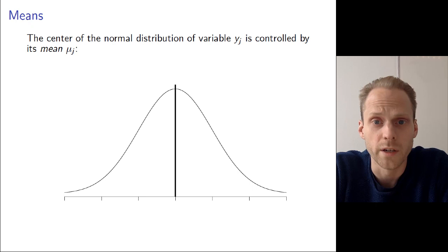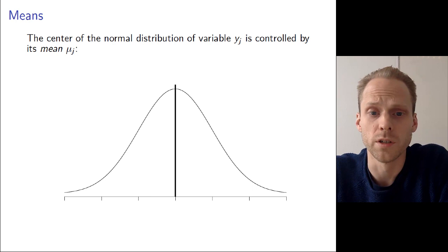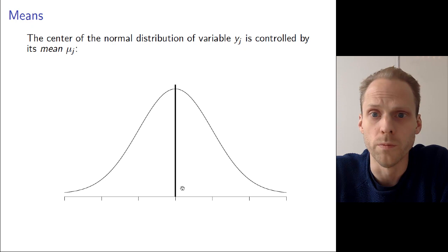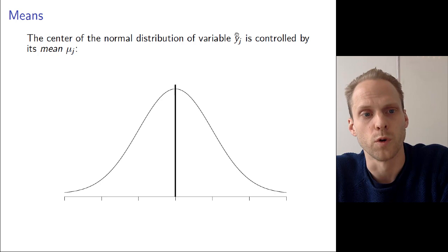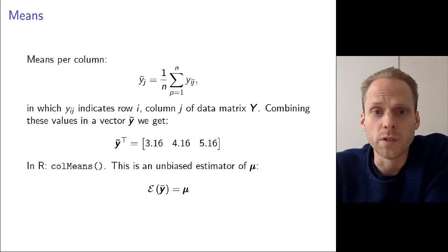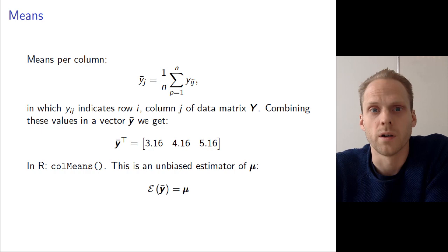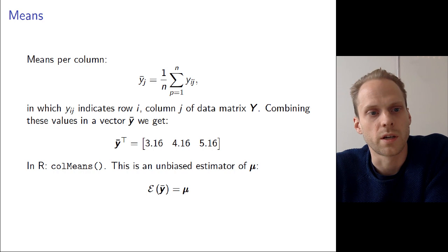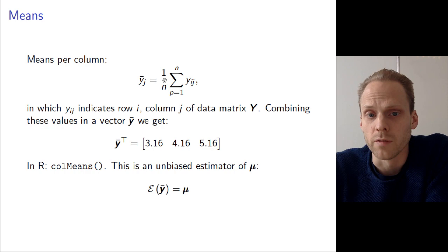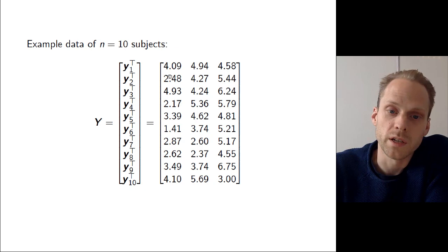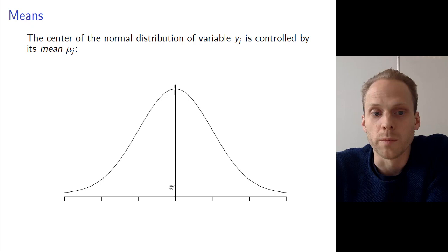In a normal distribution, taking a simple univariate example, the center of the distribution is controlled by its mean, called mu. We can compute these means from the data as sample descriptives. We compute the mean per column by summing all values in that column and dividing by 1 over n — the number of people. So for variable 1, we would sum 4.09 with 2.48 with 4.93, etc., and then divide by n to get the sample mean. We can combine means into a vector, which I call Y-bar, giving us one mean per variable. In R we can do that with colMeans.